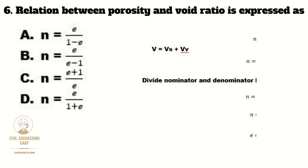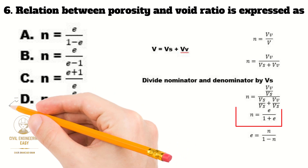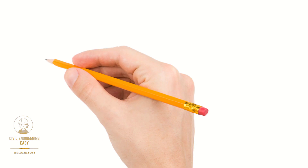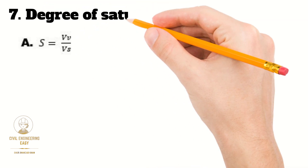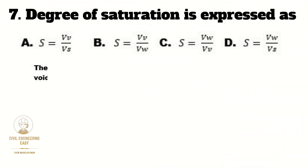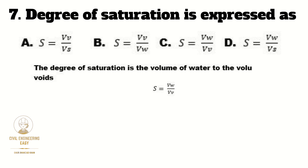In MCQ number six, the relationship between porosity and void ratio is expressed — having already derived the relation, the correct option is D. In MCQ number seven, degree of saturation is expressed as the volume of water divided by the volume of voids. The correct option is C.